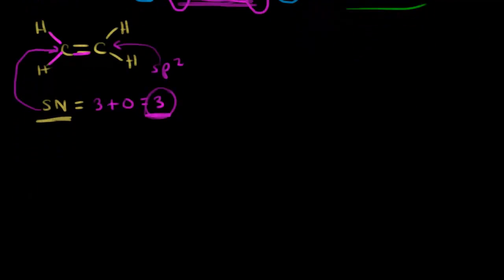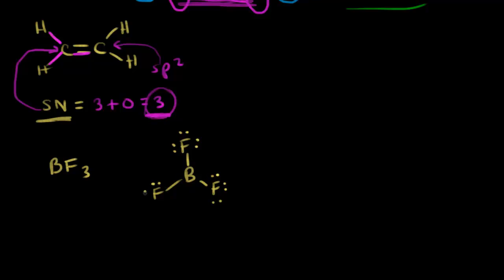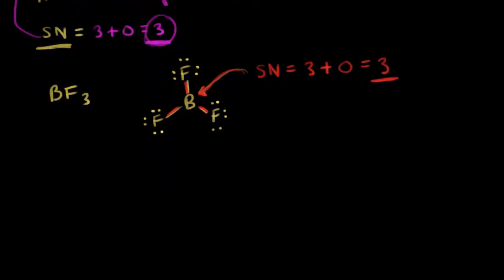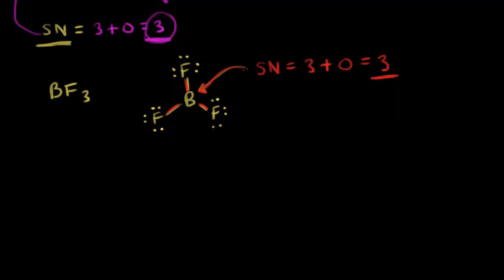Let's do another example: boron trifluoride, BF3. Drawing the dot structure, boron is surrounded by three fluorines each with an octet of electrons. To find the hybridization of this boron using steric number: we count sigma bonds — one, two, three — so three sigma bonds, plus zero lone pairs of electrons, giving a steric number of three. A steric number of three tells us this boron is sp2 hybridized, so it will have three sp2 hybrid orbitals and one unhybridized p orbital.